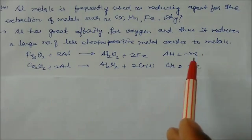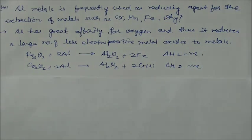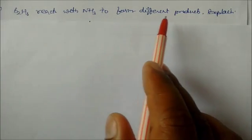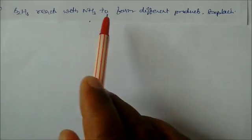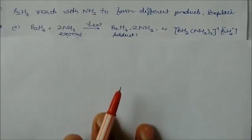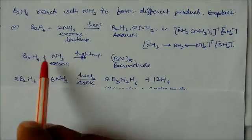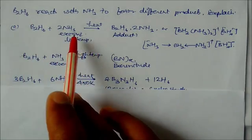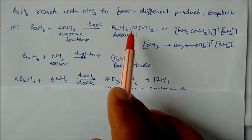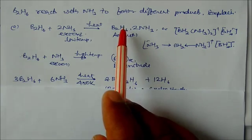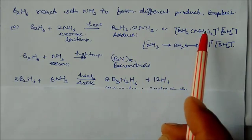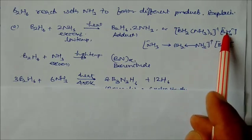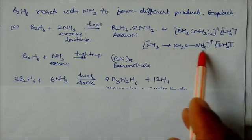B2H6 reacts with ammonia to form different products. B2H6 has different types of reactions with ammonia depending on conditions. With excess ammonia at low temperature, it converts to the adduct B2H6·2NH3, which can be written as [BH2(NH3)2]+[BH4]−. With excess ammonia at high temperature, it becomes boronitride.